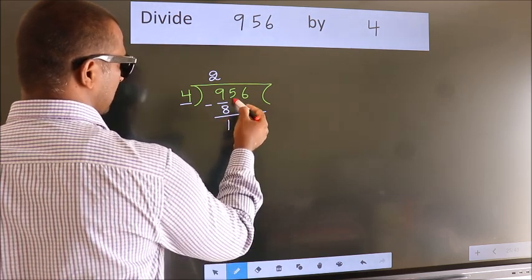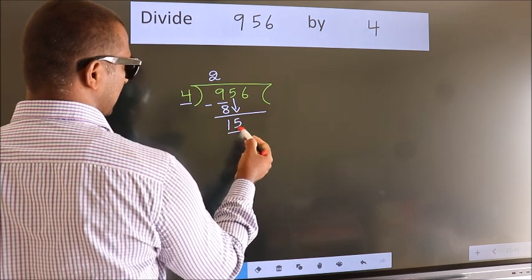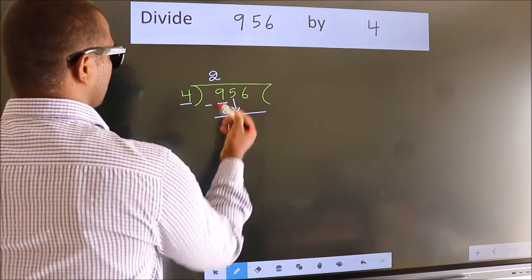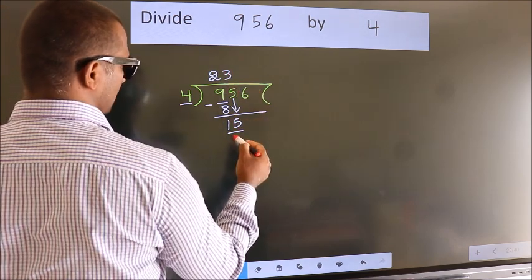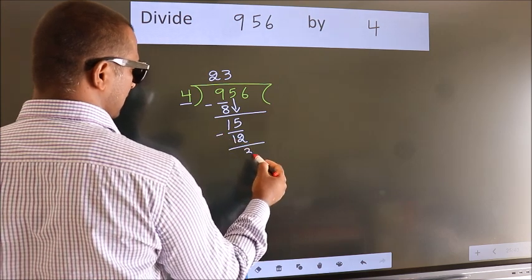After this, bring down the next number. So 5 down, making 15. A number close to 15 in the 4 table is 4 times 3, 12. Now we subtract and get 3.